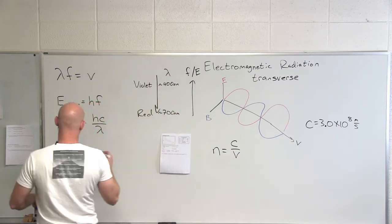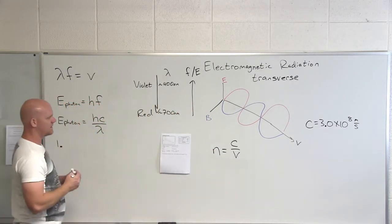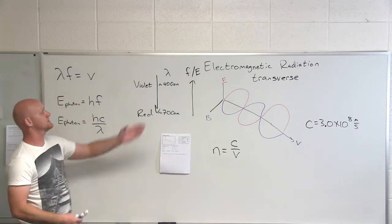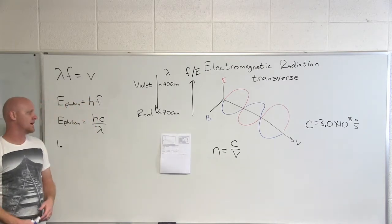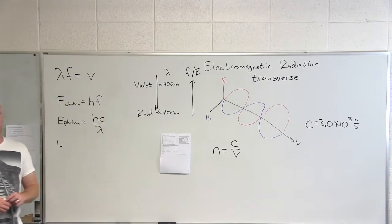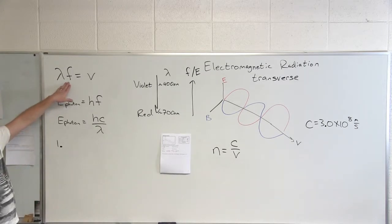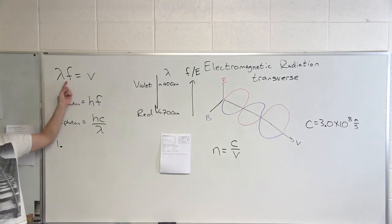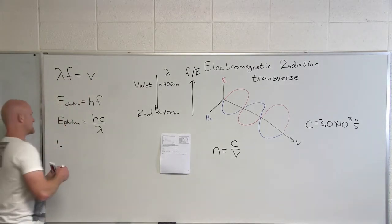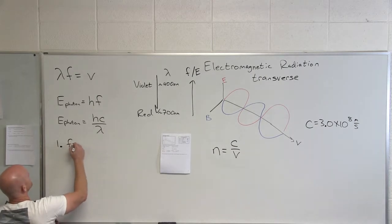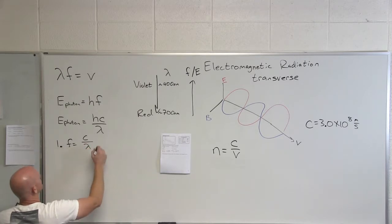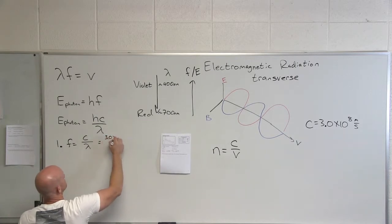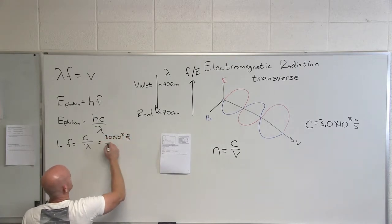Question number one: the wavelength of a violet photon is 400 nanometers. What is its frequency? What is its energy in joules? And what is its energy in electron volts? We'll start with frequency. We've got the wavelength. I can get the frequency because they're related through the speed of light. If I rearrange that equation and solve for frequency, we get f = C/λ. What is the speed of light?